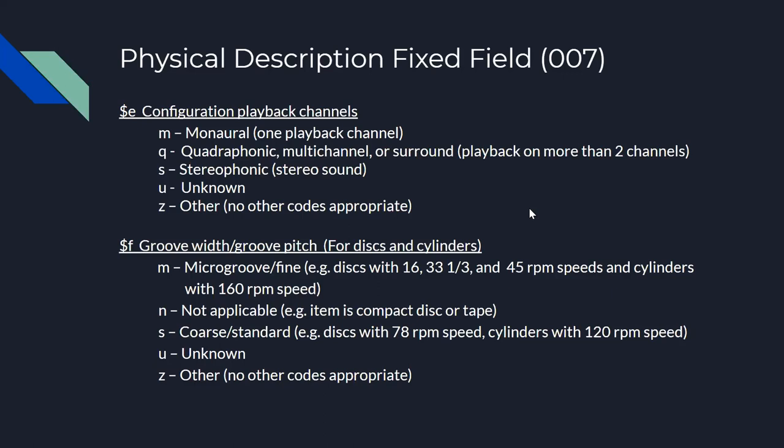Subfield E is the configuration of playback channels — basically how the sound comes out when playing the sound recording. Subfield F is only used for discs and cylinders and codes the width of the groove for discs or the pitch of the groove for cylinders, which means basically how they were recorded onto those different media.